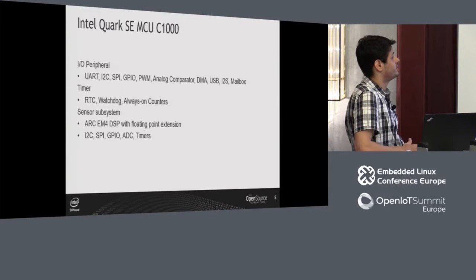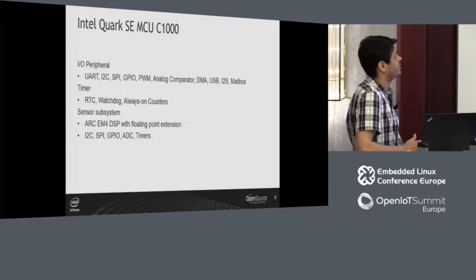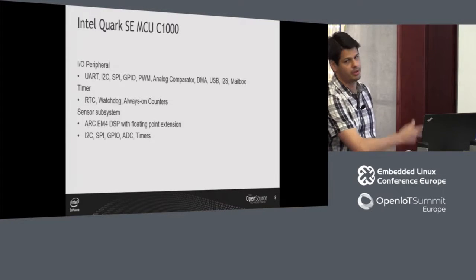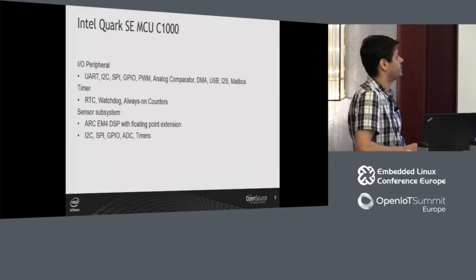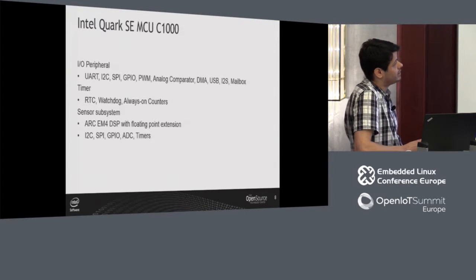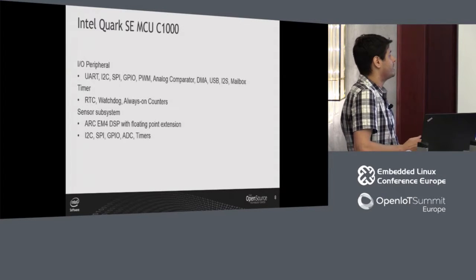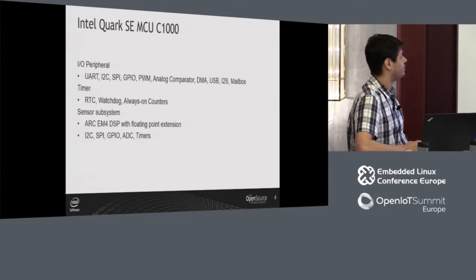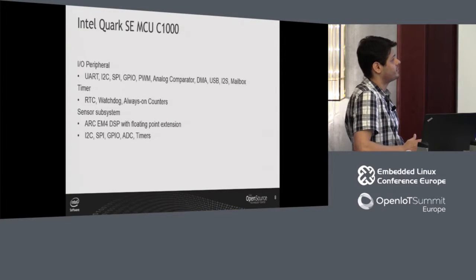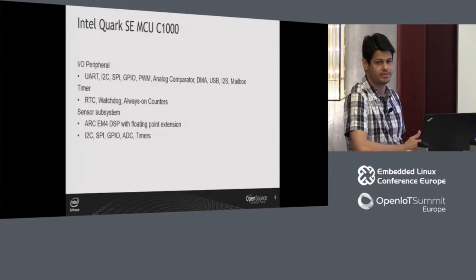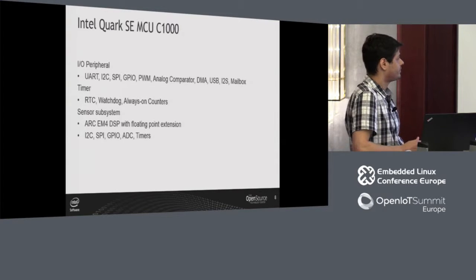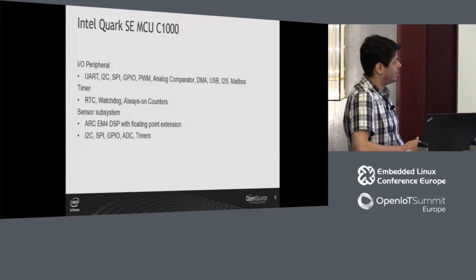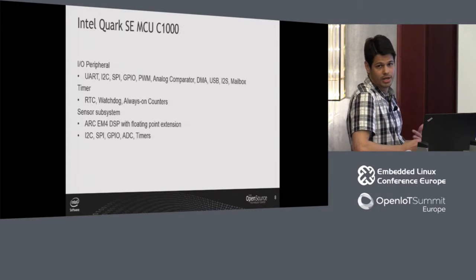Regarding IO peripherals, it's again pretty much the same, except for example I2C — we have two interfaces, while on D2000 we have just one — and we have USB, I2S, and mailbox. The new thing is we have a sensor subsystem, which is an ARC-based DSP with floating-point support, and it also has more IO interfaces including I2C and SPI.